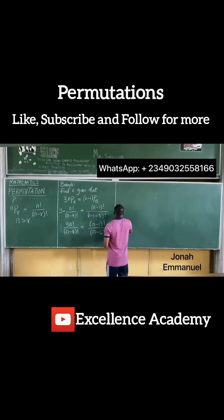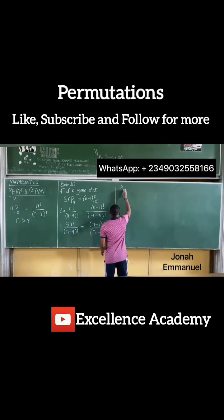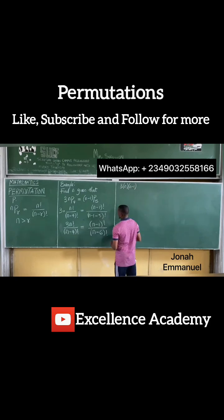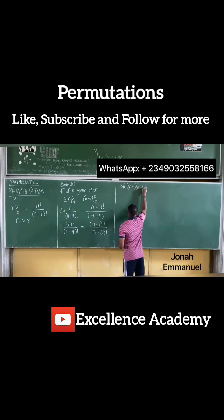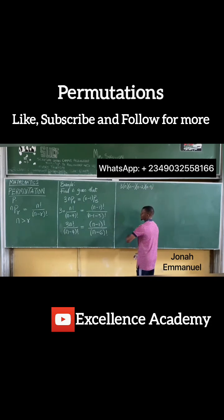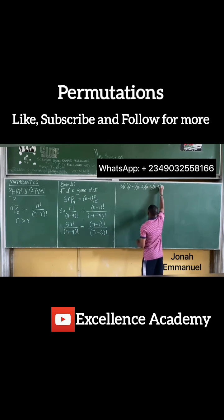Starting with the left-hand side, that gives you 3. N factorial should give you N. We said it's in decreasing order, so after N, subtract 1 — I have N minus 1. Subtract another 1, I have N minus 2. Subtract another 1, I have N minus 3. Subtract another 1, I have N minus 4. We can now stop here with your factorial.